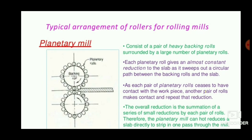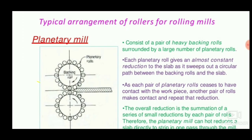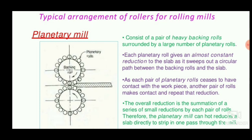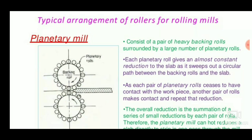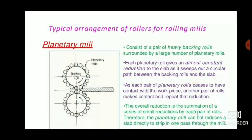There is also the planetary mill. It consists of a pair of heavy backing rolls surrounded by a large number of planetary rolls. Small rollers are placed around the center roll. Each planetary roll gives an almost constant reduction to the slab as it sweeps out a circular path between the backing rolls and the slab. Each planetary pair of rolls ceases contact with the workpiece and another pair makes contact and repeats that reduction. This is the planetary mill shown in this slide.